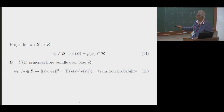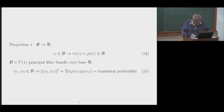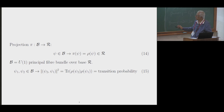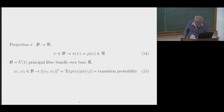For any two normalized vectors psi 1 and psi 2 in Hilbert space, the modulus square of the inner product of psi 1 with psi 2 — which can also be written as the trace of rho(psi 1) times rho(psi 2) — has a physical interpretation as a transition probability. It means that if the system were prepared in the pure state corresponding to psi 1, and a measurement is carried out to see whether the state is the one corresponding to psi 2, this is the probability with which you will get the answer yes.